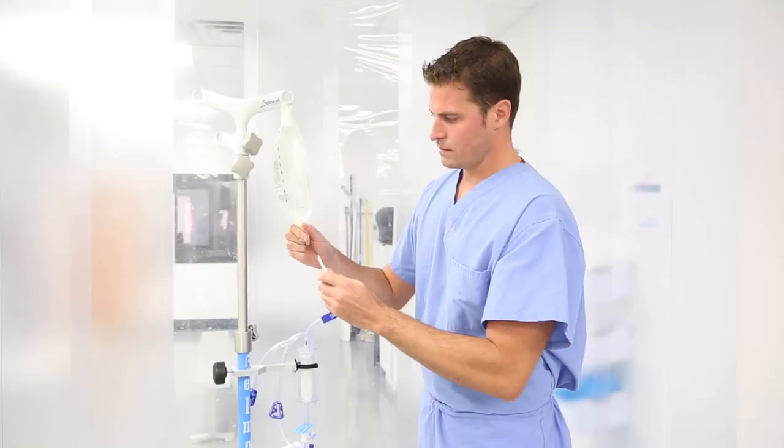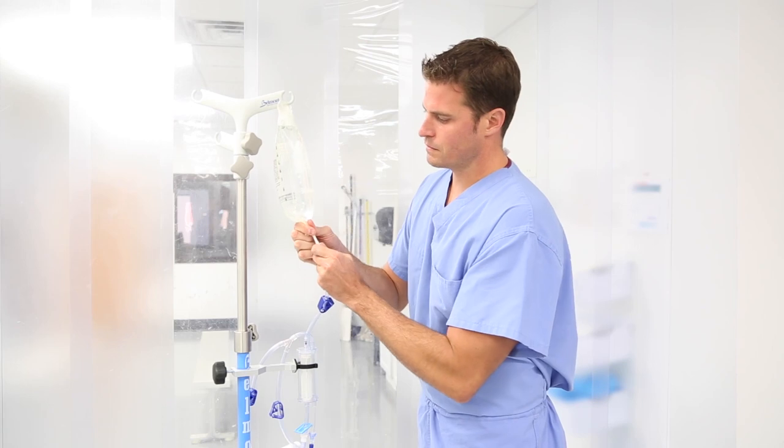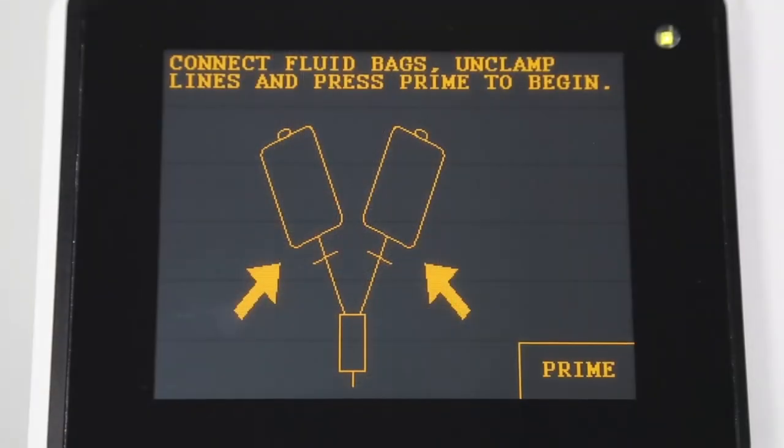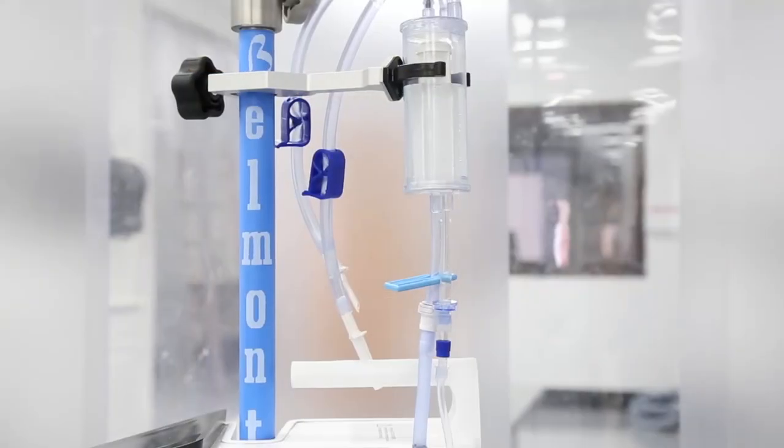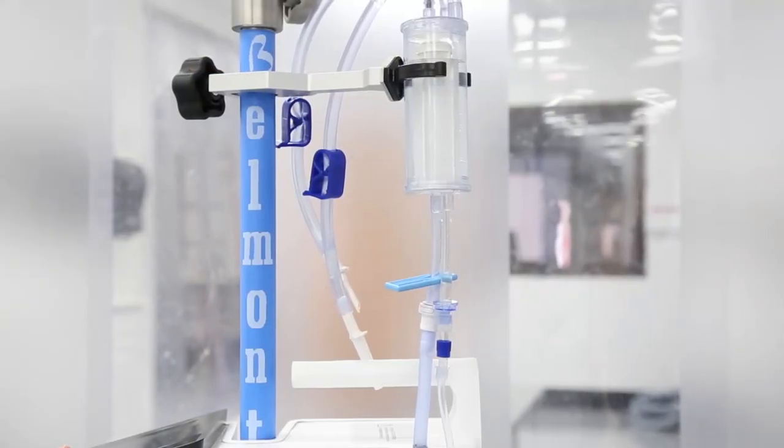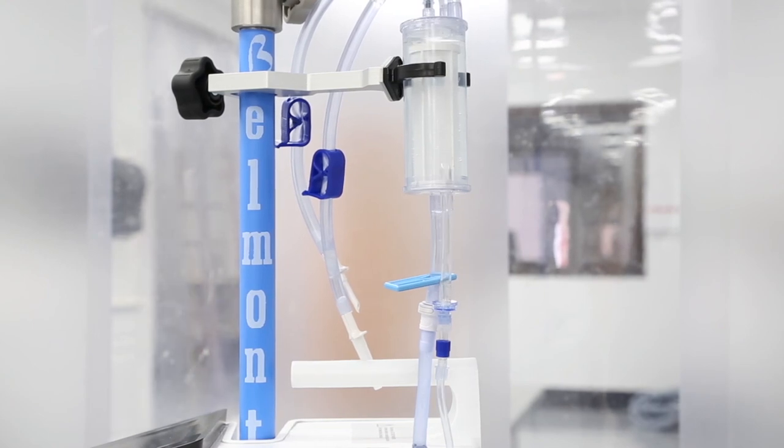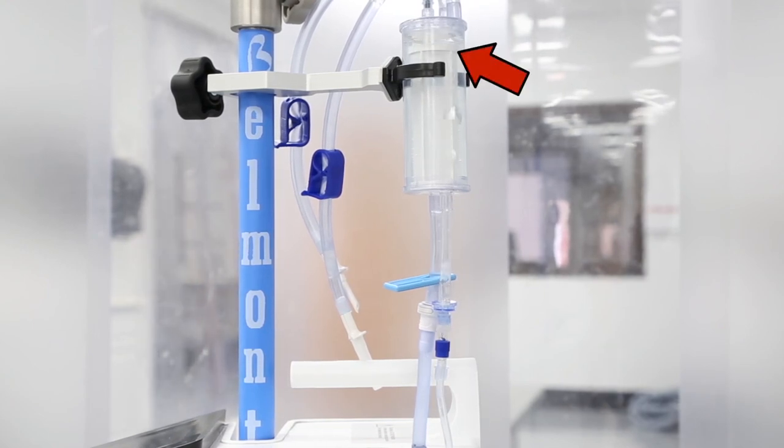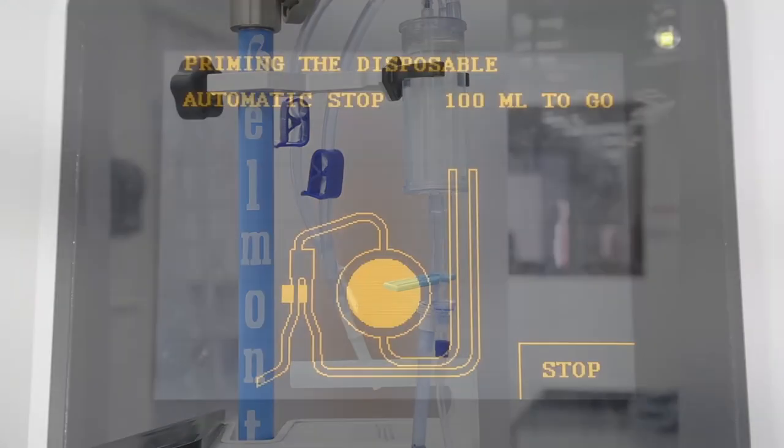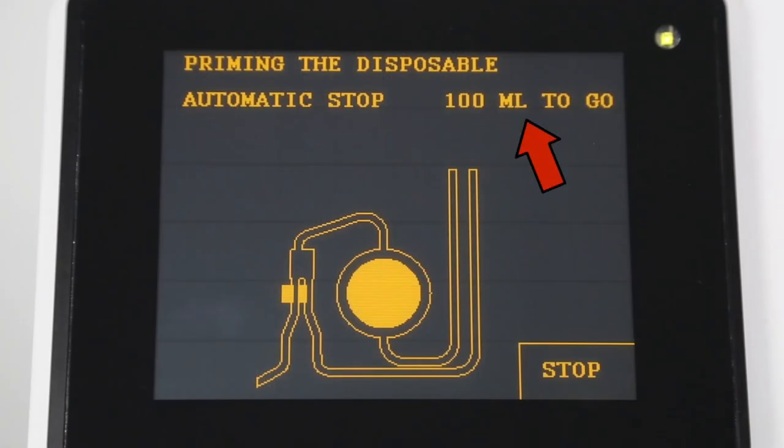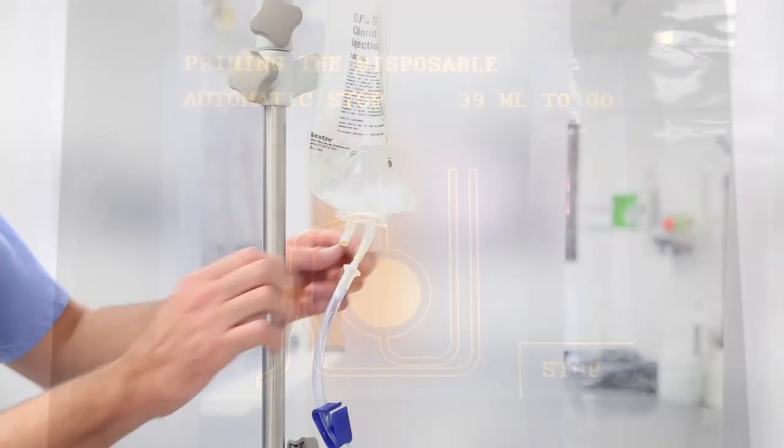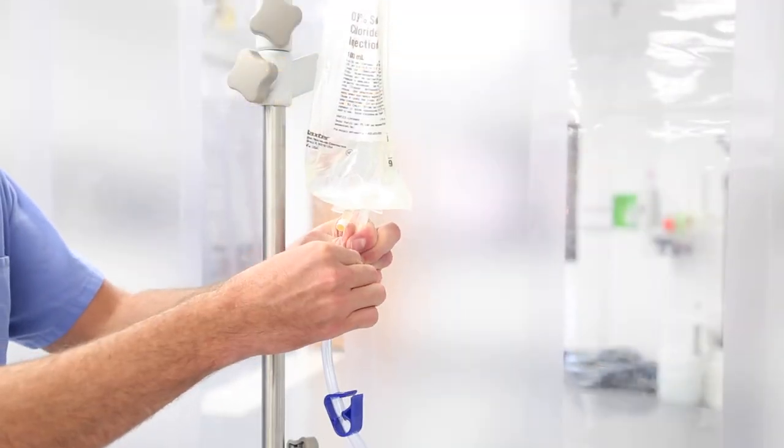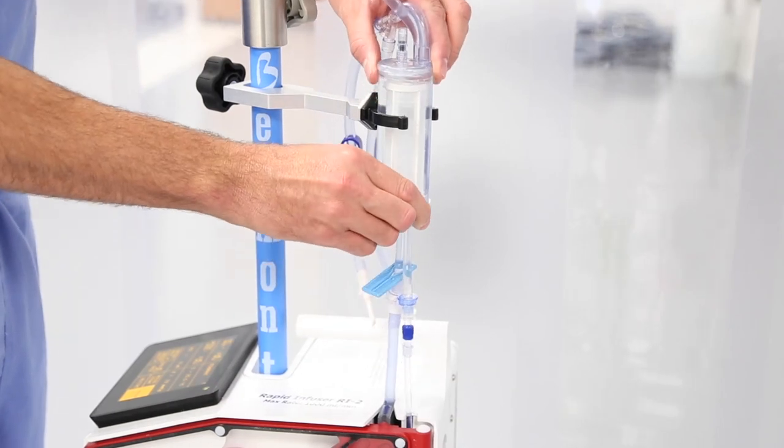Press next to move to the prime screen. You will now be instructed to connect fluid bags and unclamp lines. When ready, press prime to begin priming the disposable circuit. The roller pump will automatically prime the system in about 13 seconds. Fluid will be drawn through the tubing while the air will be directed out through the recirculation and vent line. During prime, the 100 milliliters to go will count down to zero. If the Belmont Rapid Infuser RI2 does not count down or resets back to 100 mLs, confirm that there is enough fluid in the system and that the tubing is not kinked or stretched too tight.